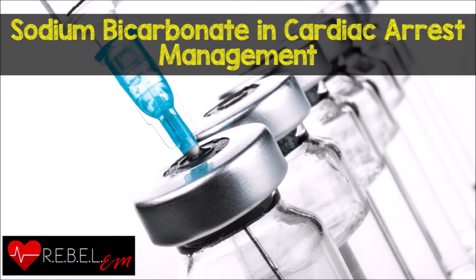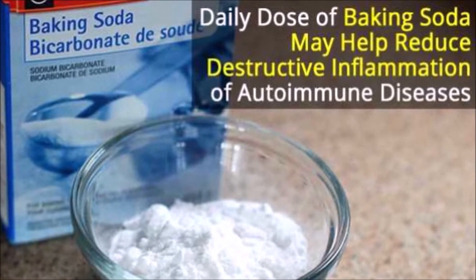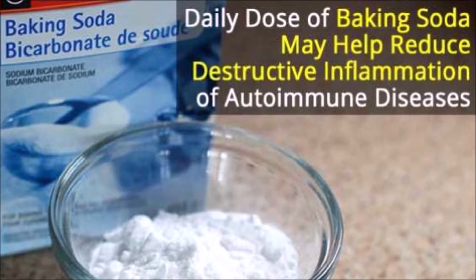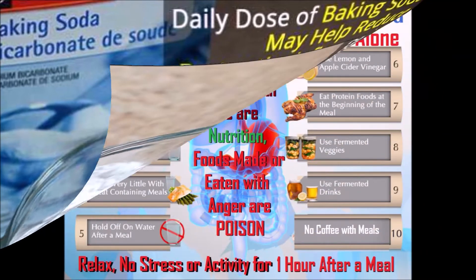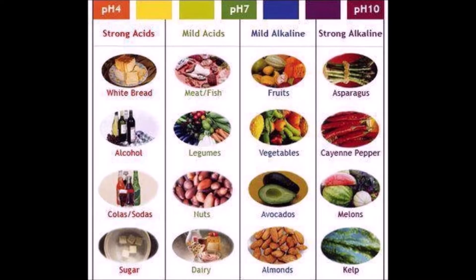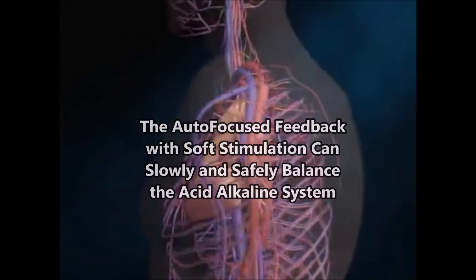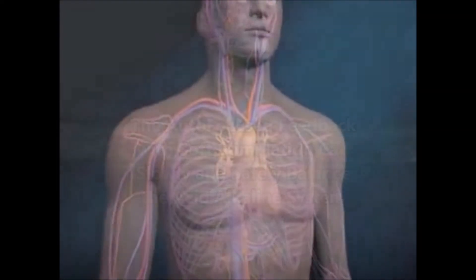Getting bicarb up is beneficial, but don't get too carried away with it. A little dose now and then can help fend off many different diseases. Foods eaten and made with love are nutrition; foods made or eaten with anger are poison. We want more alkaline foods and less of the acid. Acid-alkaline balance is so important for the circulatory system, the nervous system, the lymphatics — it's important for life.